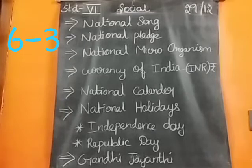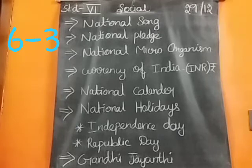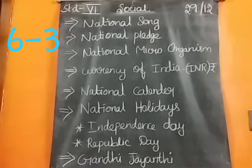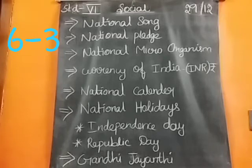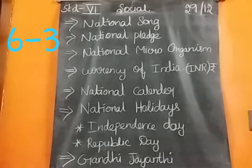On January 29th, the third day of Republic Day celebrations, the events are brought to an end with the Beating Retreat ceremony, performed by the bands of the Indian Army, Navy, and Air Force. The President of India is the chief guest of this day. The Rashtrapati Bhavan band is illuminated at 6 PM as part of the celebration.